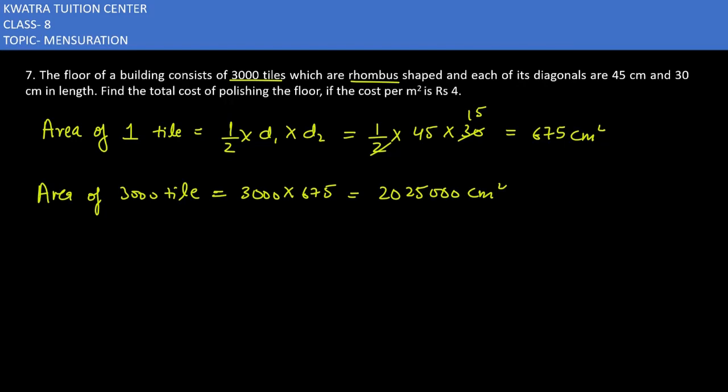So meter square, we have to convert. 1 meter is how much? 100 centimeter. And 1 meter square is 100 into 100, so 10,000 centimeter square. You will get 20,250 divided by 100, so you will get 202.50 meter square.